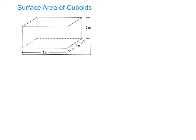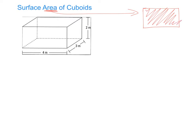First things first — surface area. The word 'area' we all know since primary school; it relates to the space taken up inside a 2D shape. So let's take a rectangle for instance — it's the area inside the rectangle. You may have spoken about the area of a classroom being like the tiles on the floor. The perimeter, however, is the distance around the outside, so don't get confused between those two.